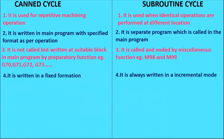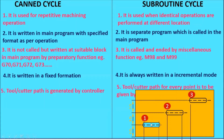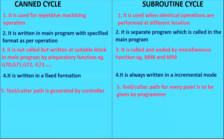In CAN cycle, it is written in a fixed formation — we don't change it to incremental or absolute; that is why CAN cycle is also called a fixed cycle. The tool or cutter path is generated by the controller automatically — we don't take any effort for that. But in the subroutine cycle, the tool or cutter path for every point has to be given by the programmer. The programmer decides whether to make slot number one, two, or three first, and according to that the program will jump in the main program and make the slot. This is how we make the comparison between the CAN cycle and the subroutine cycle.